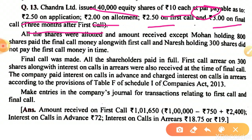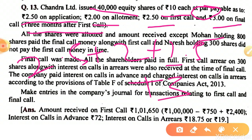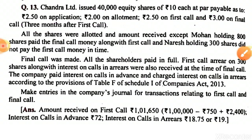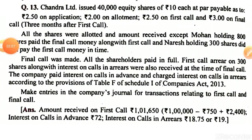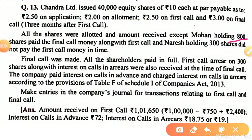This time period is essential for calculating the interest. The total is 2.5 plus 2 plus 2.5 plus 3, which equals 10 rupees. All the shares were allotted, and Mohan holding 800 shares paid the final call money along with the first call — that is, calls in advance.